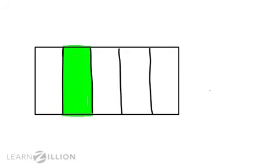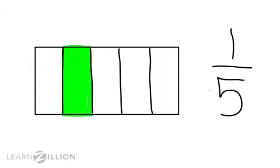Let's look at another shape. I want to draw the fraction that matches this shape. Since I know a fraction is the part that we are thinking about over the total number of parts, I would start by counting the shaded parts. I can see that only one part is shaded — it doesn't matter where that shaded part is located, it's still just one part. I would write one on top as my numerator. Then I would draw a line. Now, to complete the fraction, I have to count the total number of parts: one, two, three, four, five. I would write five as the denominator because there are five total parts in the whole shape.